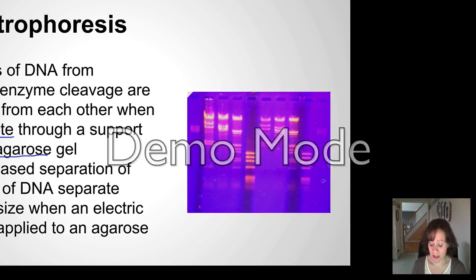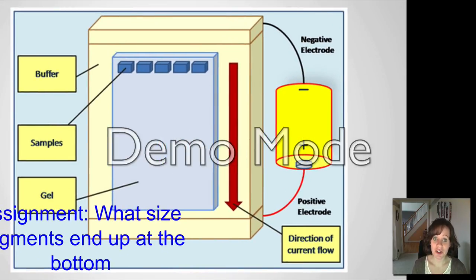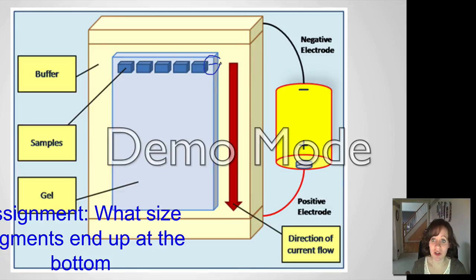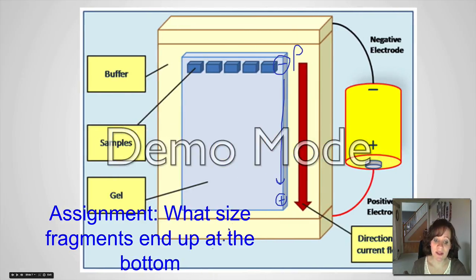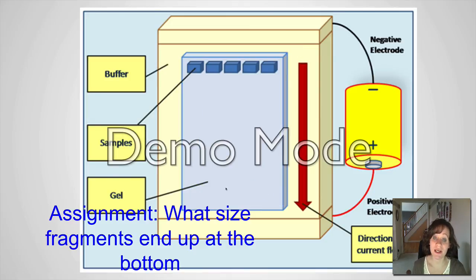Here's a simplified picture of how this happens. Here's your gel — the red represents the electric current. When you apply an electric current to DNA, it's going to run down the gel. DNA has a negative charge because of those phosphates, so it's going to run towards the positive side. Here's the negative electrode and here's the positive electrode. The DNA is separated through the gel because of that electric current. Your assignment is to tell me what size fragments end up at the bottom — are the small fragments down here or do the large pieces end up here? Tell me what size fragments end up at the bottom and why.